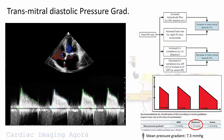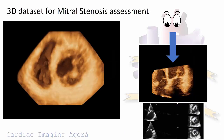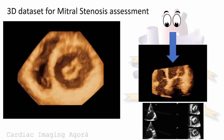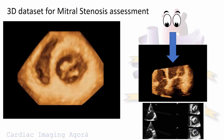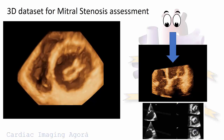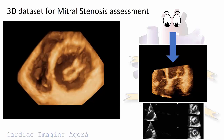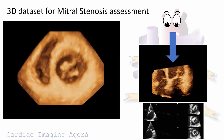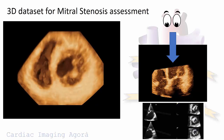Two other elements to evaluate are mean pressure gradient and pulmonary artery pressure. With 3D transthoracic echocardiography, it is possible to calculate the planimetry with the biplane modality, 3D zoom mode, or full volume acquisition focused on the mitral valve.